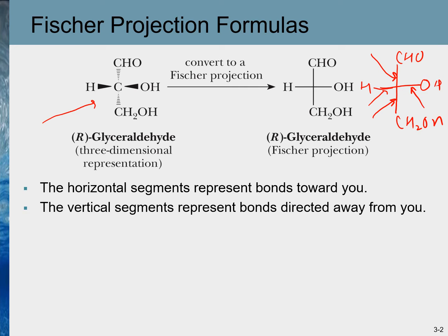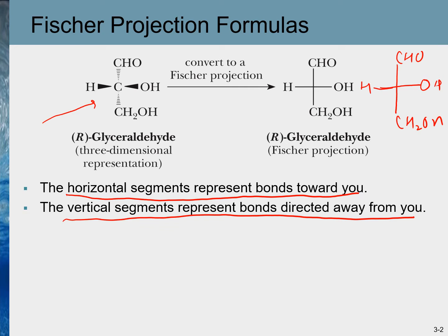To review: in a Fischer projection, horizontal segments represent bonds coming towards you, and vertical segments represent bonds going away from you. Therefore, only the central carbon atom is in the plane — all other atoms are either above or below the plane.